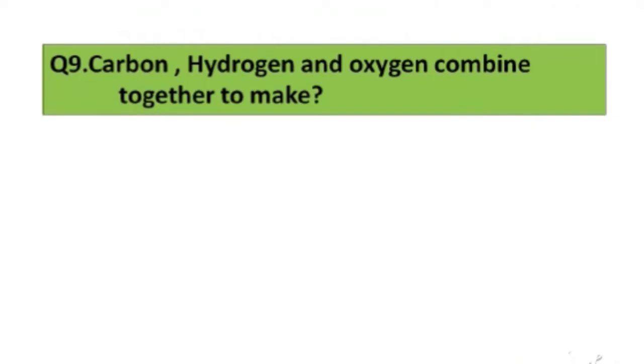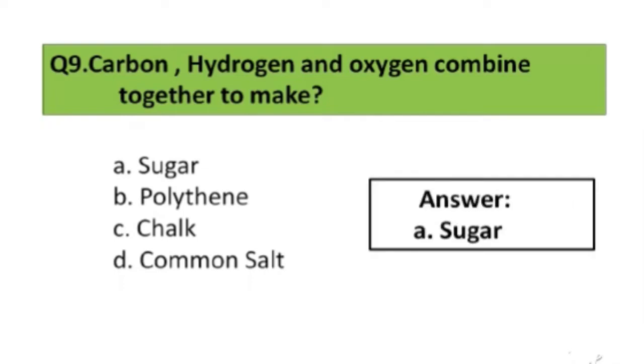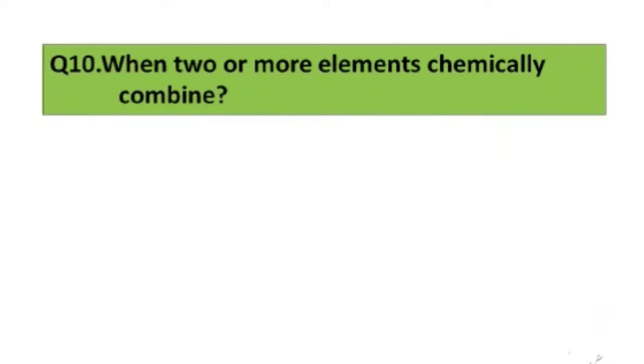Question number 9. Carbon, hydrogen and oxygen combine together to make: A. Sugar, B. Polythene, C. Chalk, D. Common salt. The right answer is option A, Sugar.